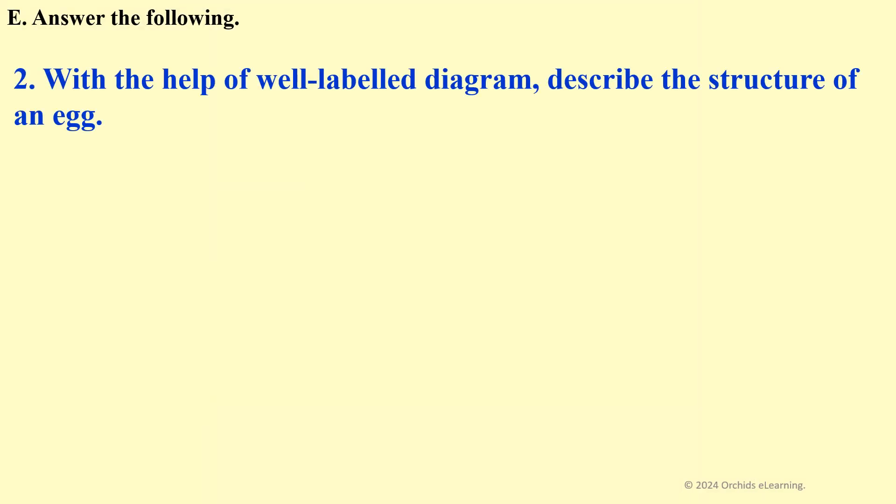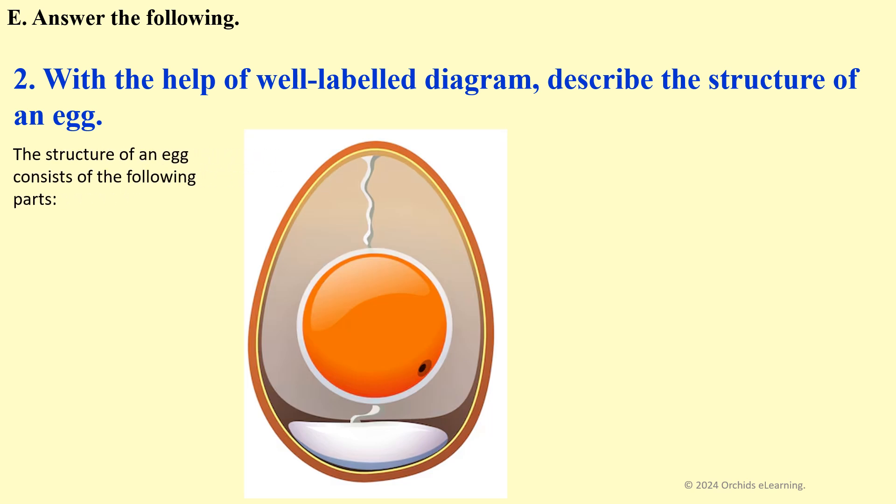With the help of a well-labelled diagram, describe the structure of an egg. The structure of an egg consists of the following parts: